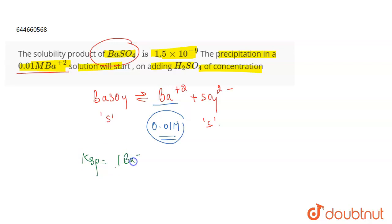That will be the concentration of BA plus 2 into the concentration of SO4 2 negative. Now the solubility product is 1.5 into 10 to the power minus 9. The concentration of BA plus 2 is 0.01, whereas the solubility for SO4 2 negative is what we are going to find out.